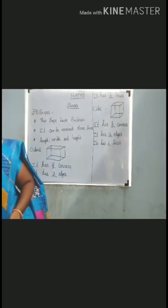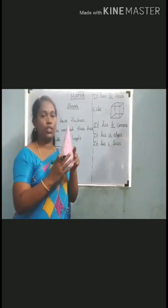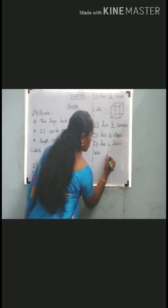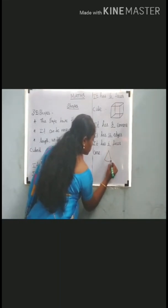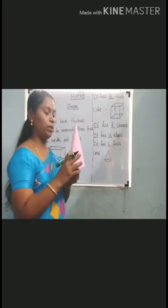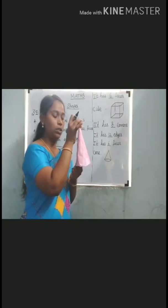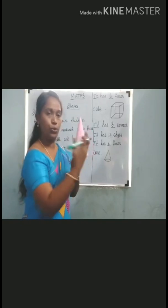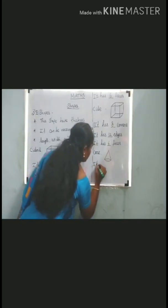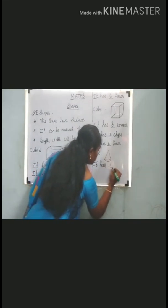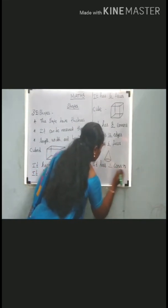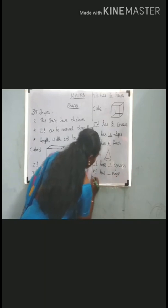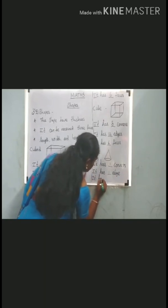Now see the next one, cone shape. This is a cone shape. It has one corner, one edge, and two faces.